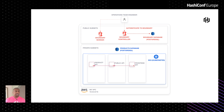For example, the operations team authenticates with Boundary and requests an SSH session with an EKS node — Boundary gives them a session on port 22, with the boundary worker managing that session. They can also connect to Postgres: Boundary starts up a PostgreSQL session on port 5432 and gives them direct access, as long as they are authorized to access that machine.